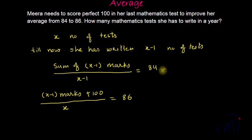So from here, the sum of X minus 1 marks is equal to 84 multiplied by X minus 1 if I cross multiply. And if I substitute this over here,